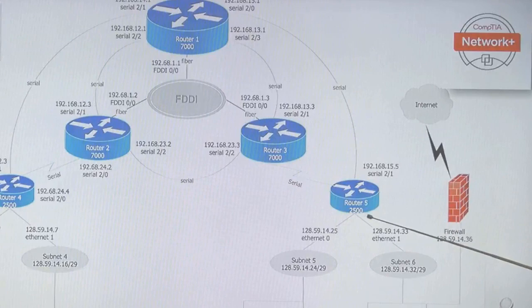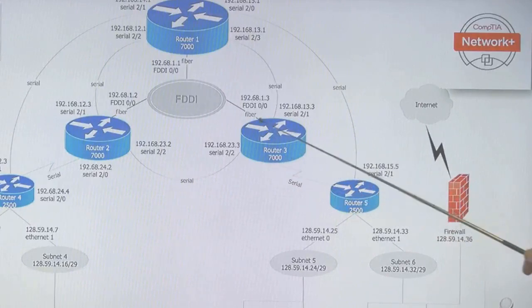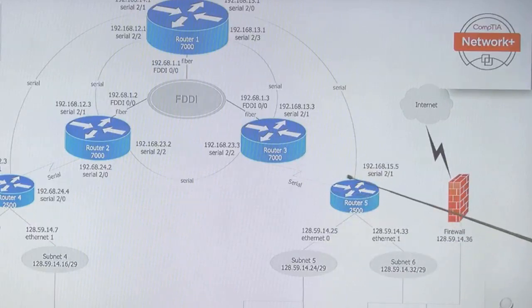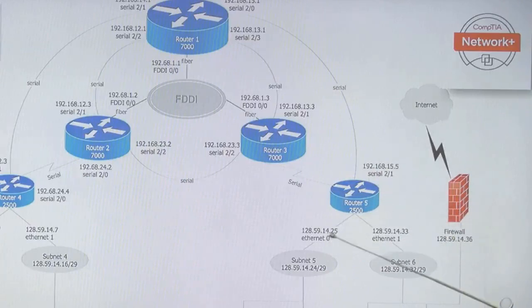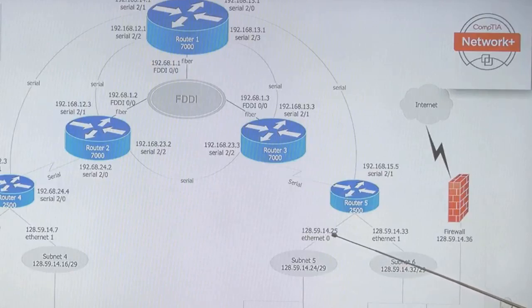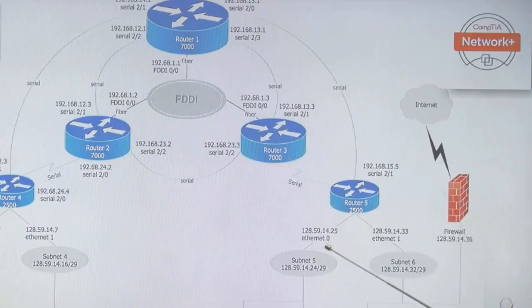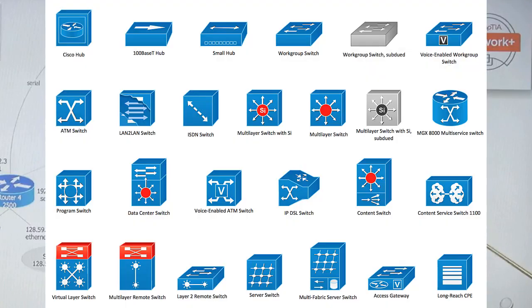Here's a very complex network diagram, and as techs we're expected to understand the symbols — firewalls, a 2500 Cisco router, a 7000 Cisco series router. Routers are always between subnets. Anytime you have a subnet, for example 28.59.14.25, and a different subnet over here, you must place a router between different subnets.